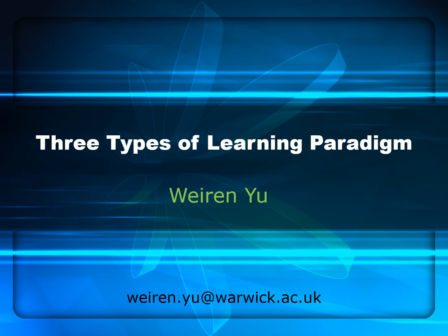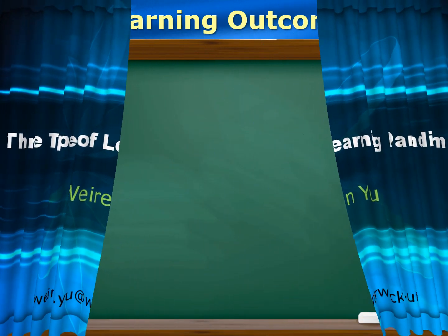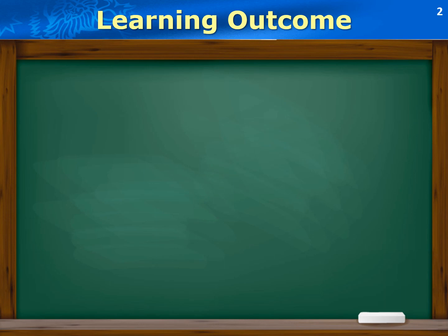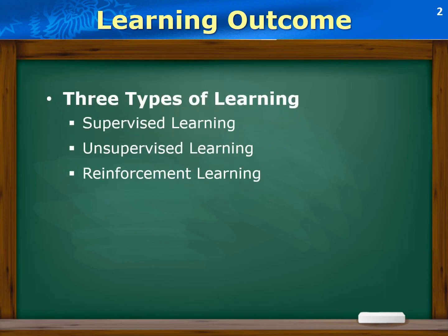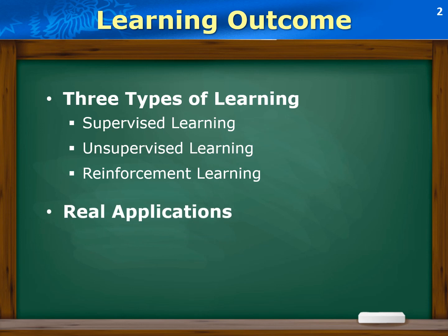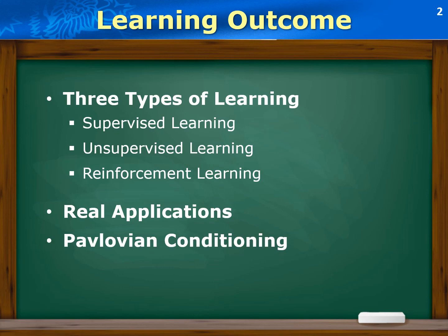Hi everyone, welcome. In this session, we are going to learn three types of learning methods in neural computing and machine learning. I will introduce the basic definition and problem formulation for each learning method and provide illustrative examples for your intuitive understanding. Upon completion of this video, you are going to learn real applications for each learning method. I will also introduce Pavlovian conditioning, which forms the basis of reinforcement learning.